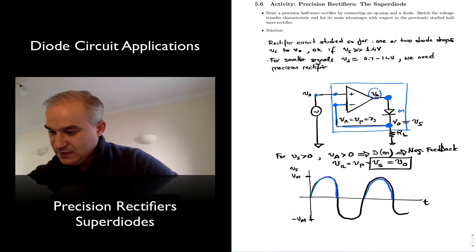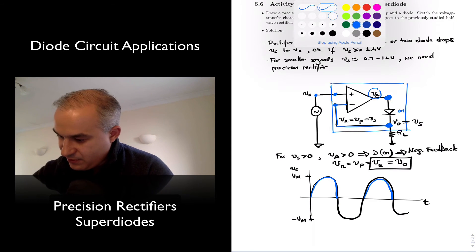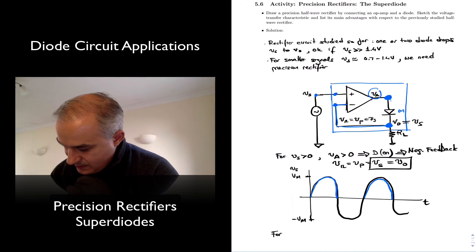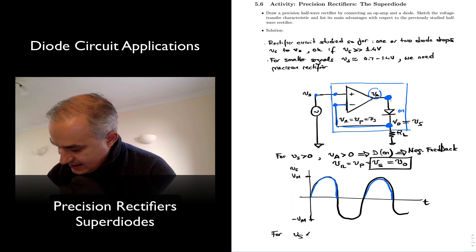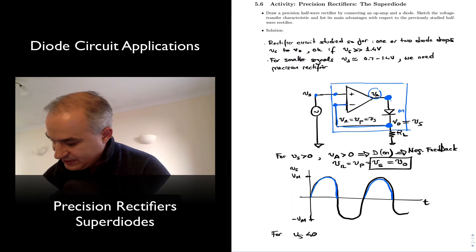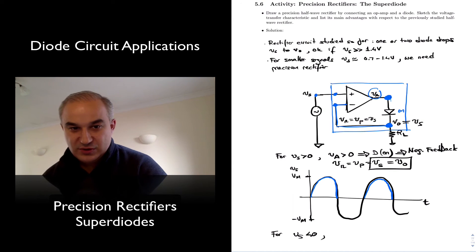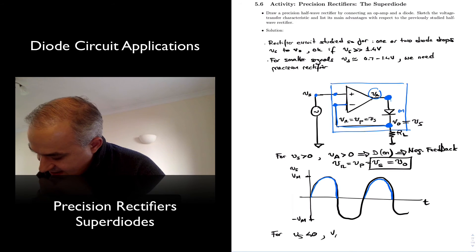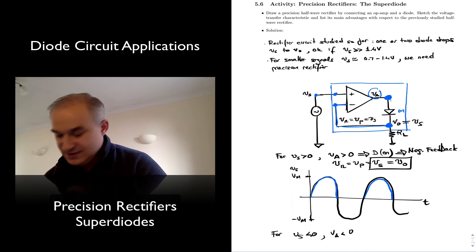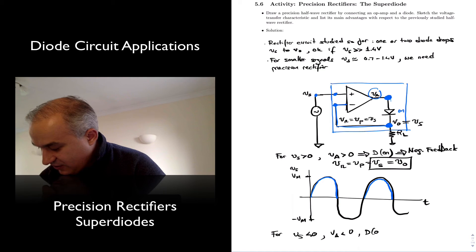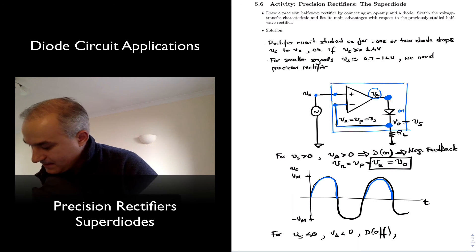And what happens for Vs less than zero? What happens in the other half? Well, in that case, we are going to have that VA is less than zero, the diode is off, so we have an open here. And therefore, my output voltage is equal to zero. There is no negative feedback. Feedback loop is open. Loop open.